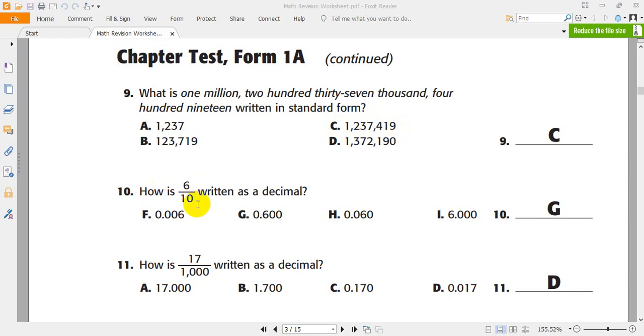How is 6 over 10 written as decimal? 0.6? 0.6. Yes, G. G is the right answer. I told you, if you found any zeros on the right of the decimal, you can get rid of it. But not between numbers. I mean on the right of the number.